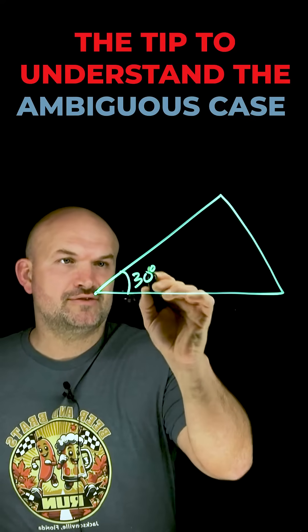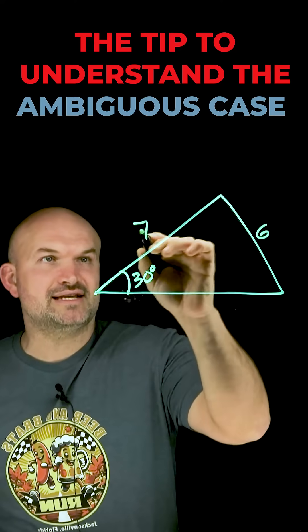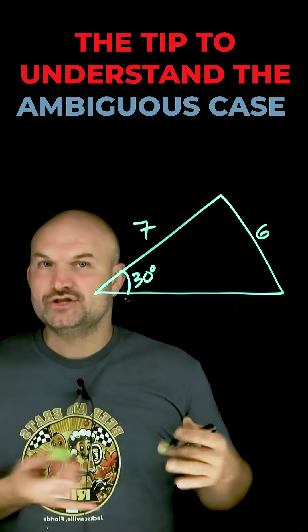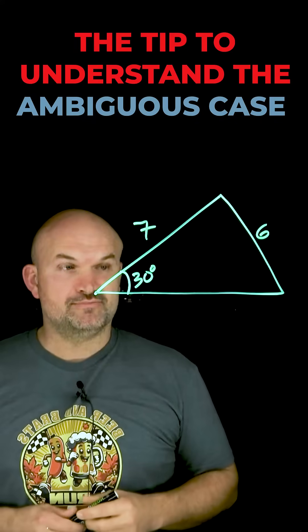So if I had some angles here, let's say 30 degrees, let's say six, and let's say seven, how can I identify quickly how many cases, one, two, or none, that this triangle is going to be?